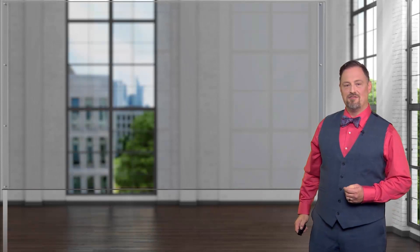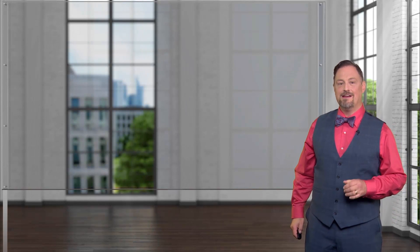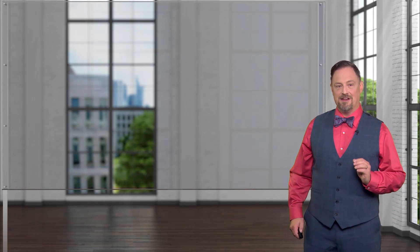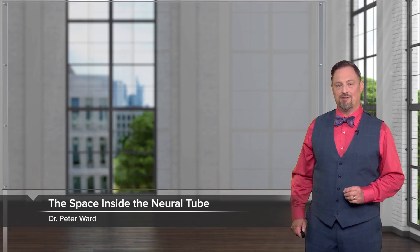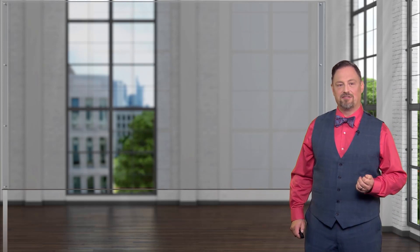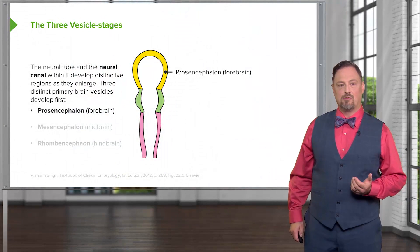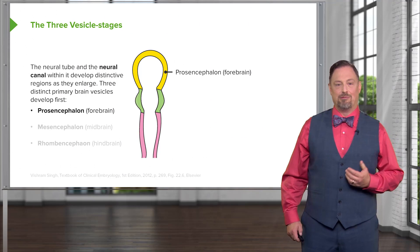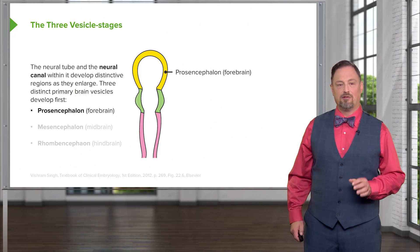We're now going to turn our attention to the neural tube and more specifically the space within it. The space inside the neural tube is vitally important to the normal function of the brain and the rest of the central nervous system. Initially there's a neural canal at the core of the neural tube, and at the cranial end where the brain and brainstem will be developing, it develops several bulges.